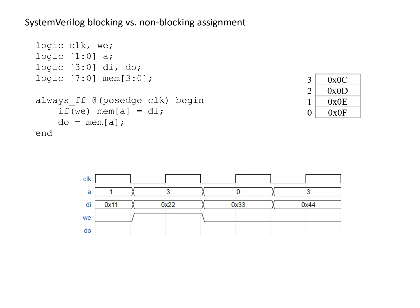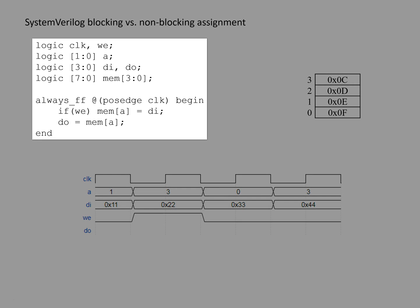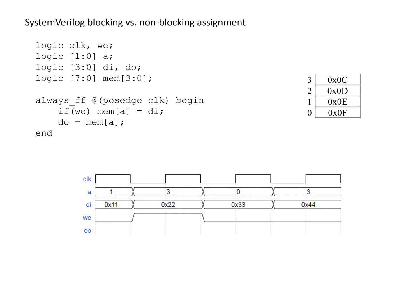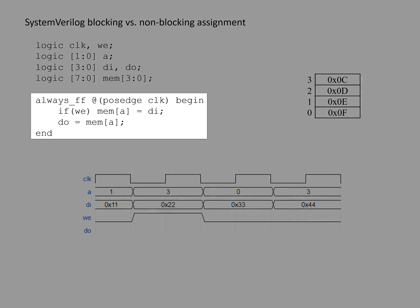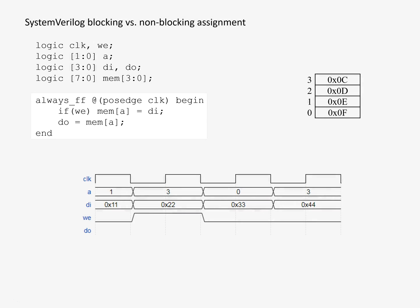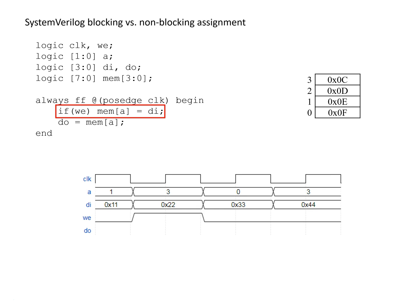The code for the memory array is shown on the left. We've got our signals going into and coming out of the memory array, and then the memory itself is implemented by this always block. There are basically two things that can happen on the positive edge of the clock: if write enable is 1, we take whatever value is on DI (data in) and put it into the memory at the address specified by A. The second is that whatever is in the memory location specified by A is put onto DO (data out).